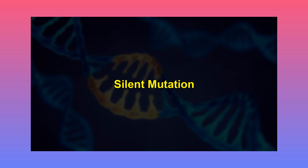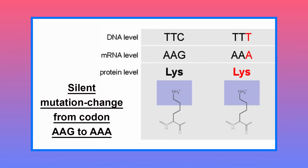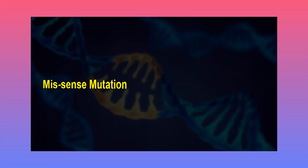In silent mutation, a new codon codes for the same amino acid as the wild type one. It is a type of non-expressive mutation that doesn't have any significant effect on the phenotype of the organism.